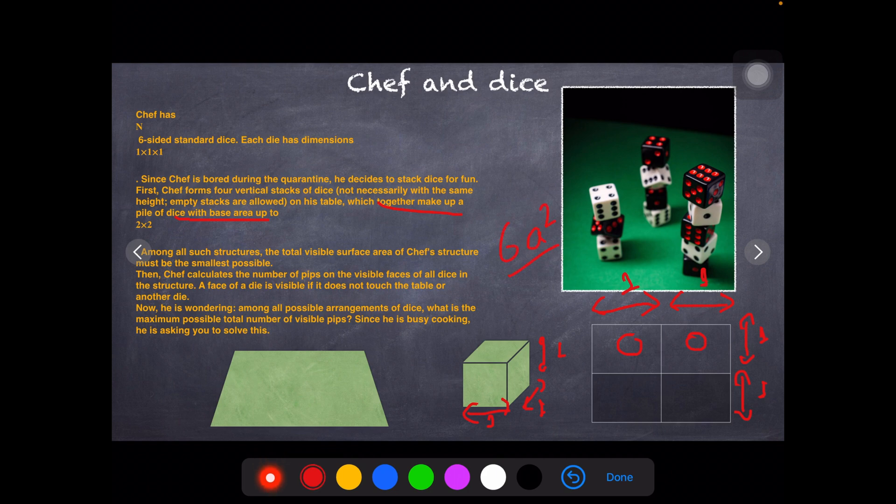The die that you can see is basically the die that is not in contact with the floor or in contact with any other die. So here, just say what is the visible number of numbers that you're seeing: it's five, three, and six. This is the visible pips that we can see.